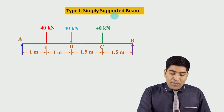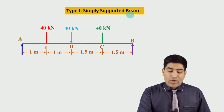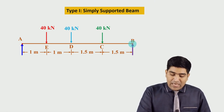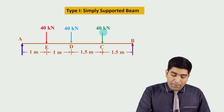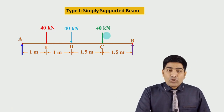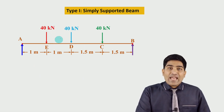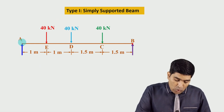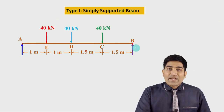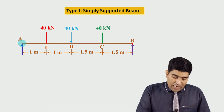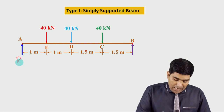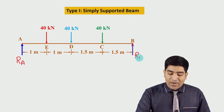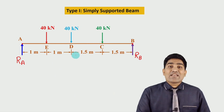Type 1 is a simply supported beam. For example, here beam AB has loading applied on it. This loading is called action, and to balance the action at both ends there are simple reactions — at end A the reaction is RA and at end B the reaction is RB.